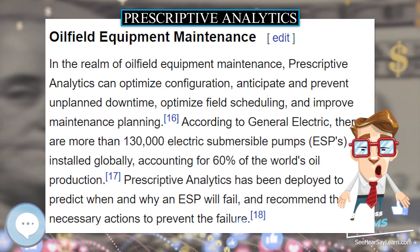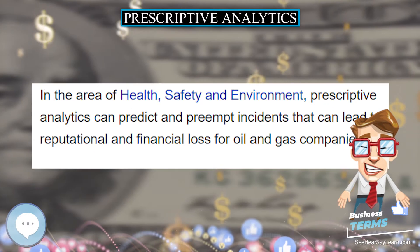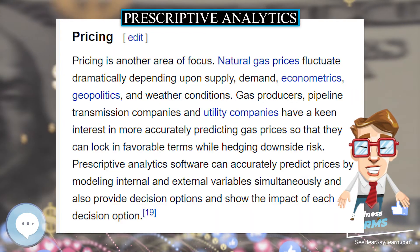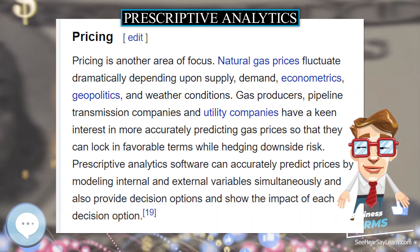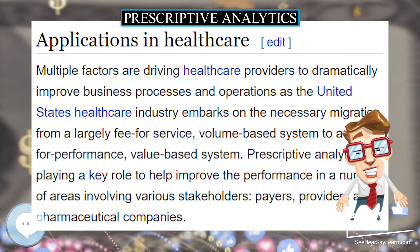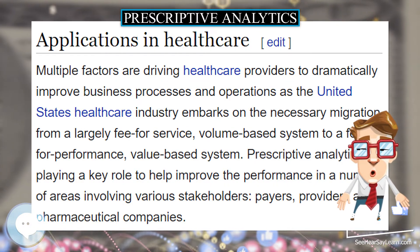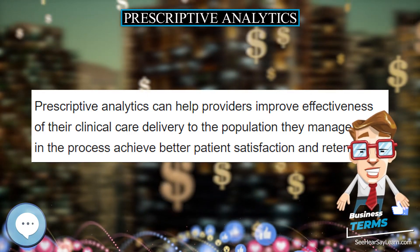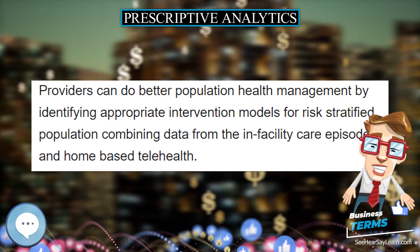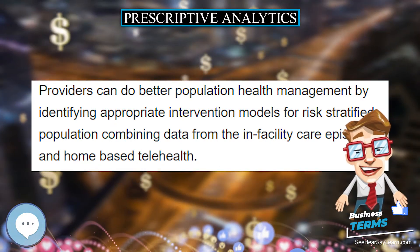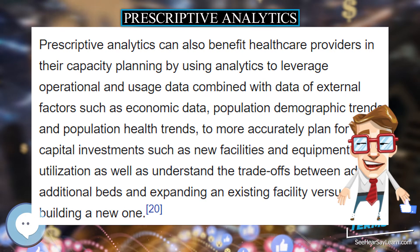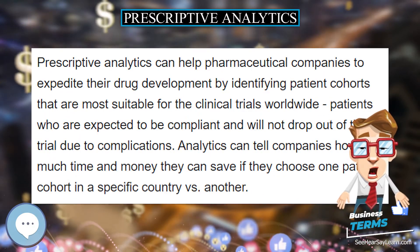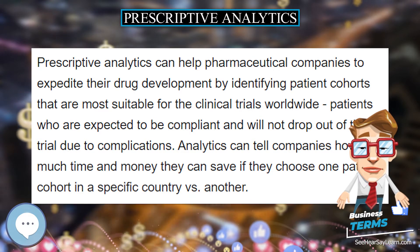In unconventional resource development, with the value of the end product determined by global commodity economics, the basis of competition for operators in upstream E&P is the ability to effectively deploy capital to locate and extract resources more efficiently, effectively, predictably, and safely than their peers. In unconventional resource plays, operational efficiency and effectiveness is diminished by reservoir inconsistencies, and decision-making impaired by high degrees of uncertainty. These challenges manifest themselves in the form of low recovery factors and wide performance variations.